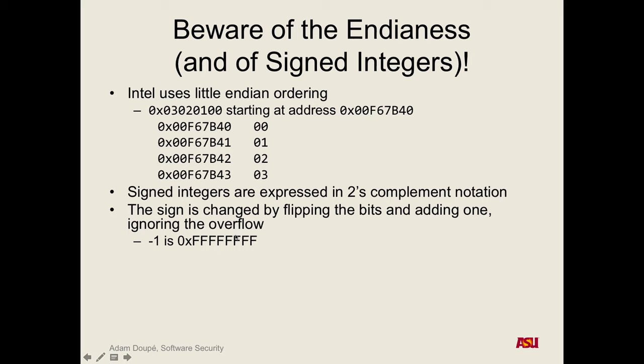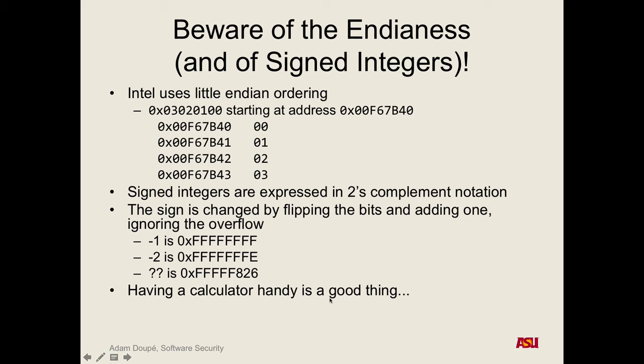Negative one is all 1s, negative two — you get the pattern. One thing that's super handy, which I always have out when doing this kind of stuff, is a good programming-mode calculator. I use the calculator app on Mac — there's a mode you can switch into for programming, so you get hex input mode and it shows you the exact bit string for your input. Make sure you have a good calculator.